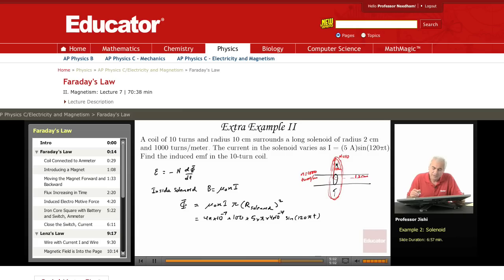So that's 4 × 10⁻⁴. This is 5. Now, all these are just numbers, constants. So I'll just put some number A times sine 120πT.